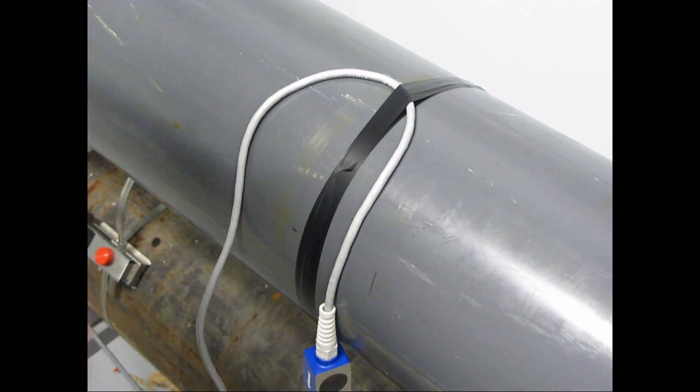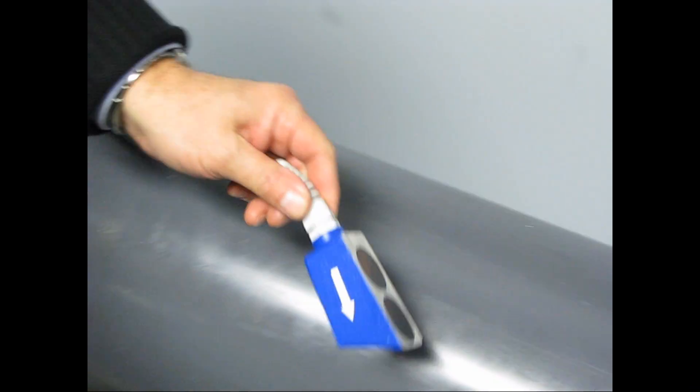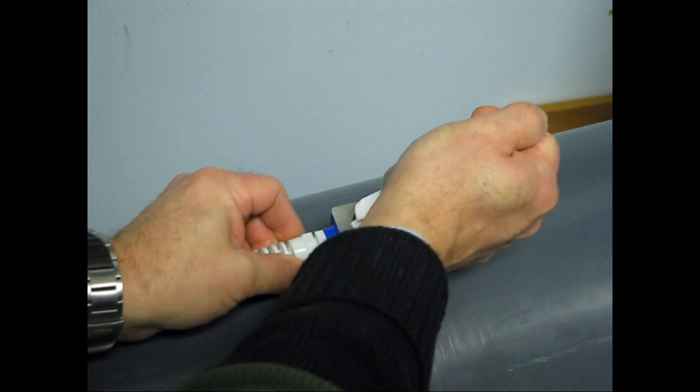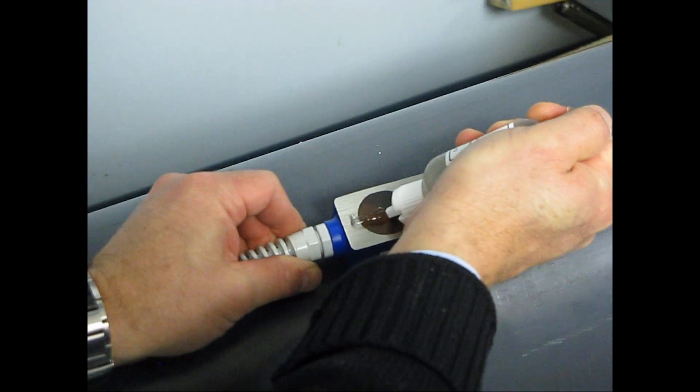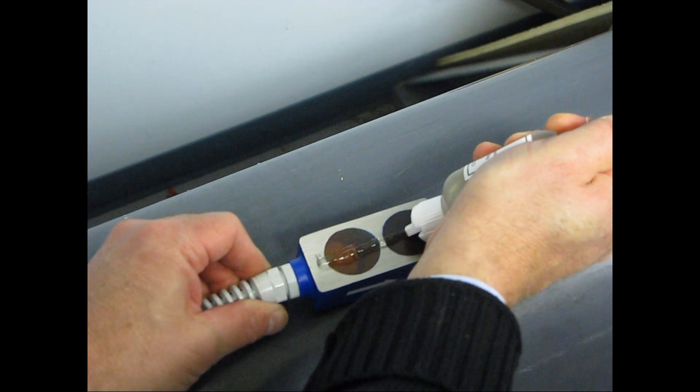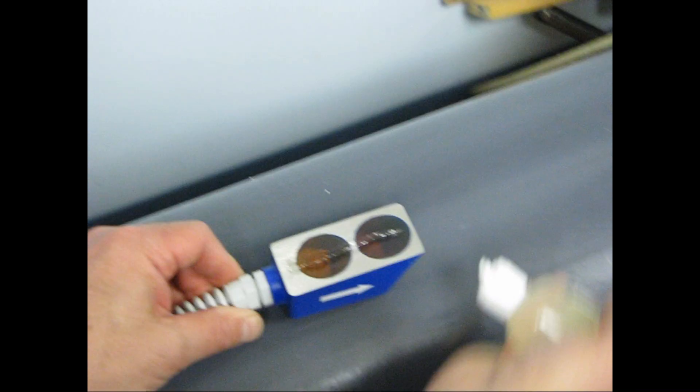First, secure the sensor cable with a loop of tape around the pipe. Then apply coupling compound to the face of the sensor. A single bead across the sensor is sufficient.